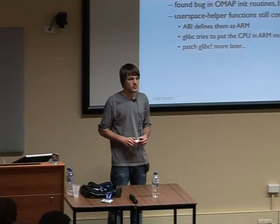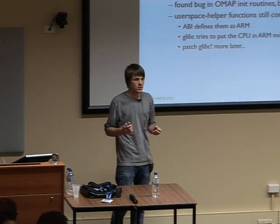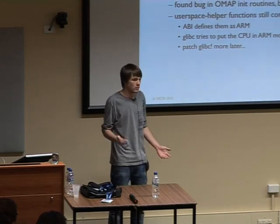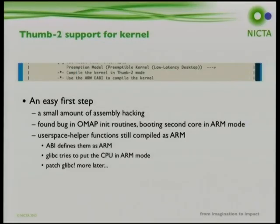The kernel didn't compile completely to Thumb2 - user space helper functions are compiled as ARM since glibc switches the CPU to ARM mode before calling them, as part of the ABI. When putting Linux on the M3, this would need to change, requiring patching to glibc. After those fixes, Thumb2 worked on the A9s and existing SMP Linux was running.